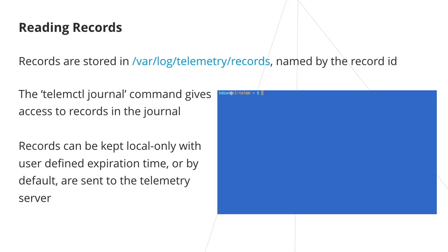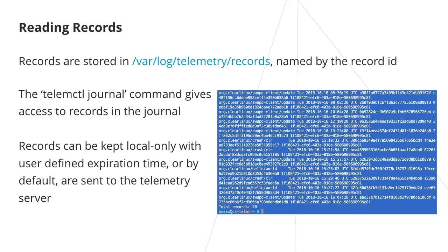You can easily access the contents of the records using the TelemControl journal command as seen here. Records include the following information: a header consisting of the issue's classification, timestamp, record ID, event ID, boot ID, and the payload — which can be as simple as a hello heartbeat message or a complete backtrace of a crash.